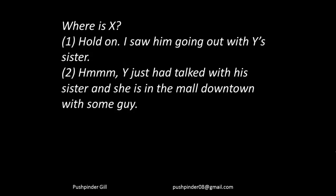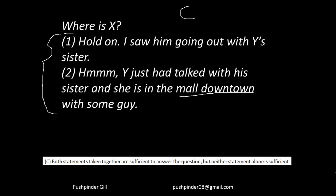Answer choice C is when you combine both the statements. For example, the question asks where is x? The first statement says he was seen going out with y's sister. The second statement says y's sister is in the mall downtown with some guy. So combining both, you know x is in the mall downtown. That means answer choice C: both statements taken together are sufficient to answer the question, but neither statement alone is sufficient.